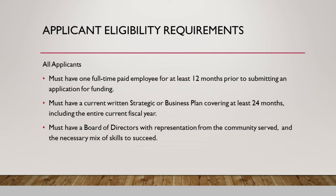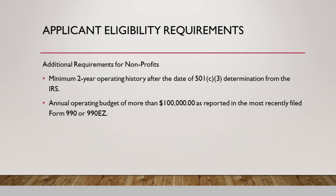Let's look at applicant eligibility requirements. All applicants must have one full-time paid employee for at least 12 months prior to submitting an application for funding. They must have a current written strategic or business plan covering at least 24 months including the entire current fiscal year. They must have a board of directors with representation from the community served and the necessary mix of skills to succeed. For non-profits, they must have a minimum two-year operating history after the date of 501c3 determination from the IRS, and an annual operating budget of more than $100,000 as reported in the most recently filed form 990 or 990-EZ.